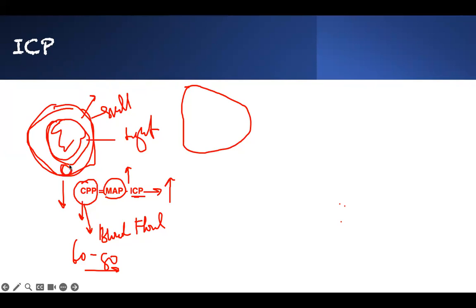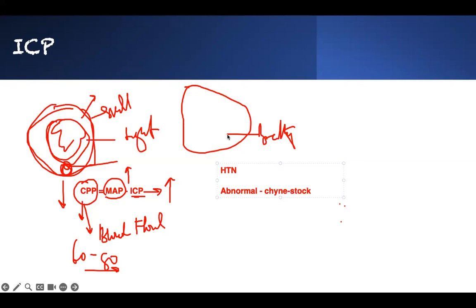The brain sits here, and your breathing center is located here. Compensationally, your body will try to increase blood pressure — hypertension. But when it increases and the ICP continues to rise, the breathing center gets into trouble. You start having abnormal breathing — Cheyne-Stokes breathing, irregular breathing. All these affect your cerebrovascular system and your heart starts to slow down, so your heart rate goes down. This is the Cushing triad.